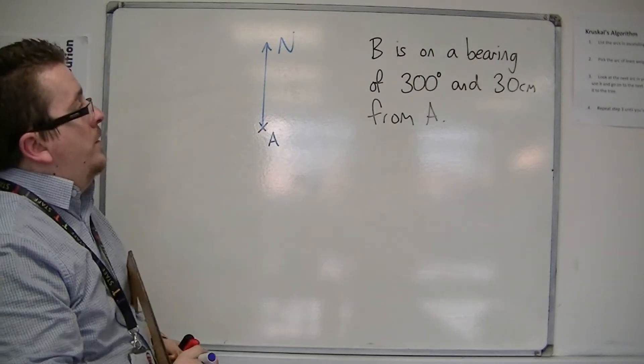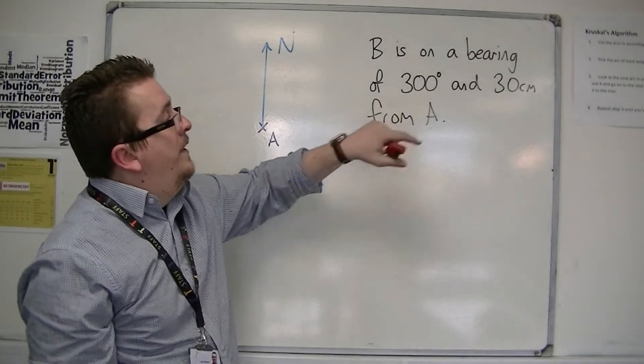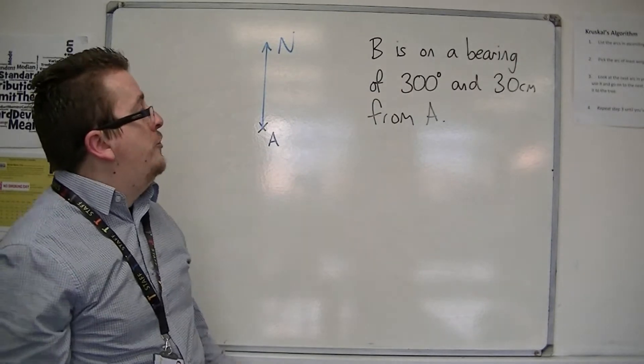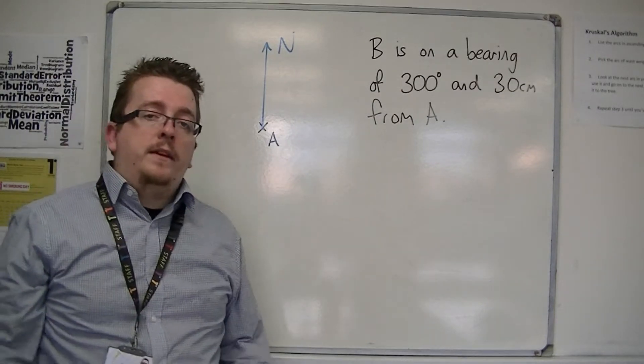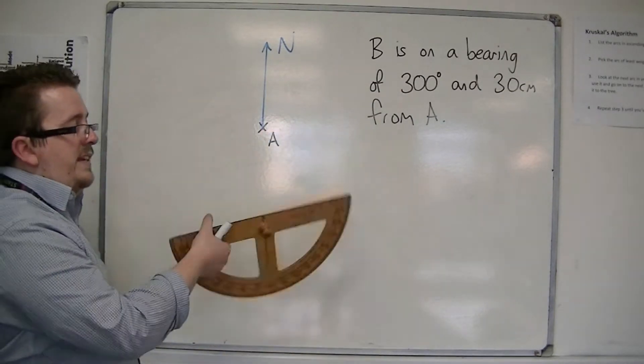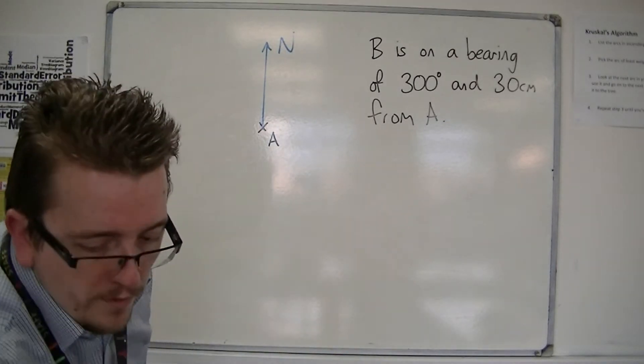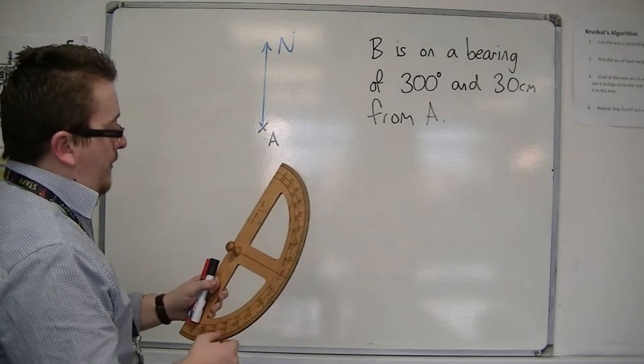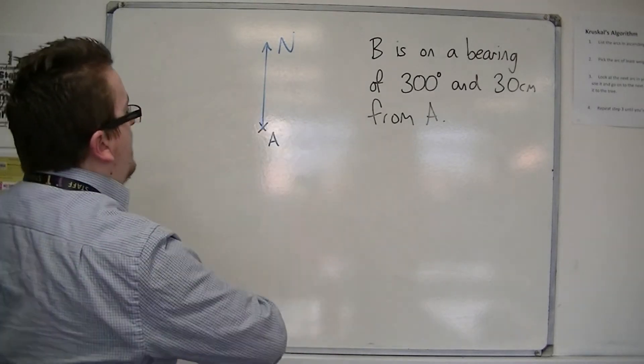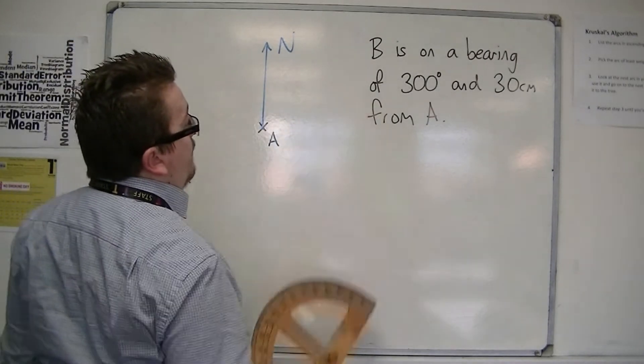And now I need to draw a point that is on a bearing of 300 degrees from A. Now I'm working with a 180 degree protractor here, and obviously I cannot draw a 300 degree angle with this. So I'm going to work from the other side, because it's a reflex angle.